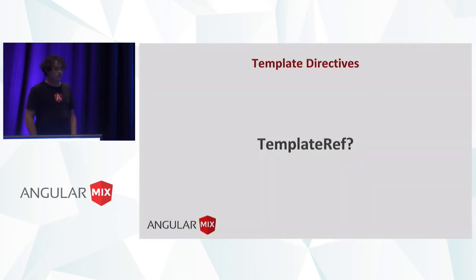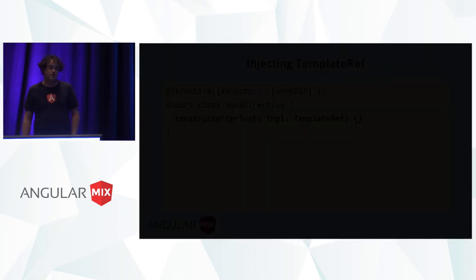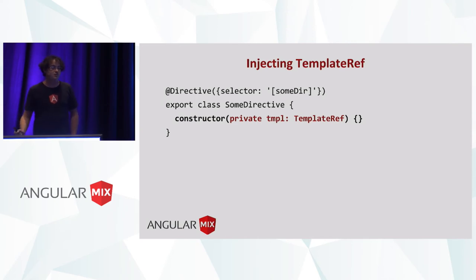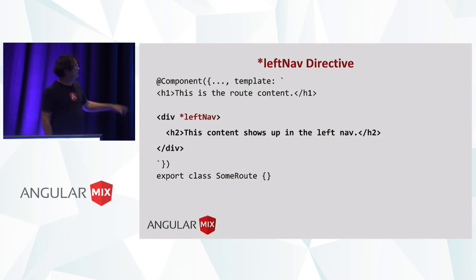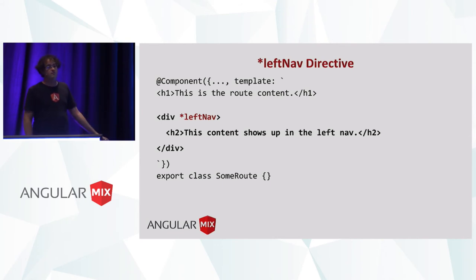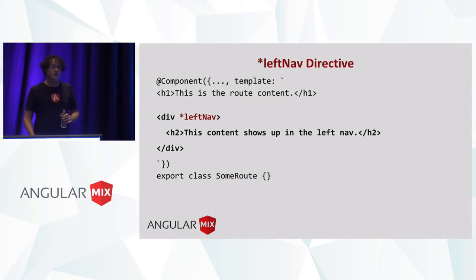So we can do the same thing. The directive has to get access to the template somehow, but we don't have a way to query for it — you can't even use ViewChild on a directive. As it turns out, it's even easier: because the directive is on the template element itself, Angular knows we can just inject it. So we can imagine creating a left nav directive — all it does is inject the template ref and send it to our left nav component. Then all we have to do in the route is annotate some content with the left nav directive, and that content will automatically be rendered in the left nav instead of in the router outlet. That is much easier to use, especially for other developers on your team who weren't part of building the system.